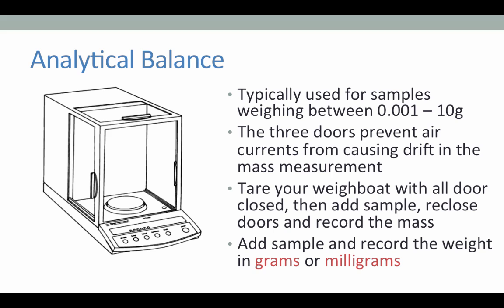So when using an analytical balance, first place your weigh boat inside the weigh chamber, close all three doors, and press the tare button and wait for the instrument to display 0 in every decimal. Once the instrument is zeroed, open the door, add your sample to your weigh boat, close the door, and wait for the reading on the digital display to settle. Record the mass of your sample, including every decimal place displayed.